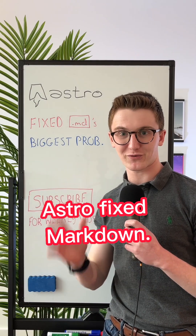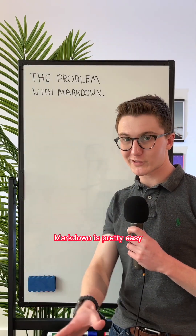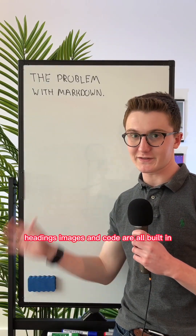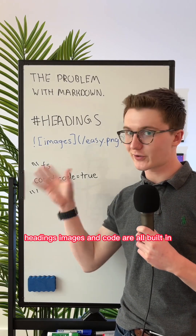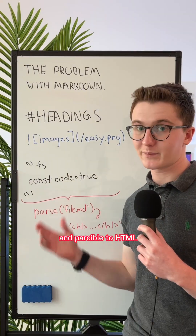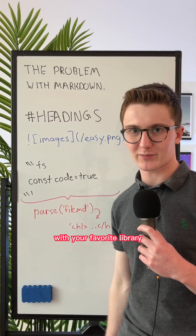Astro fixed your biggest problem with Markdown. On its surface, Markdown's pretty easy. Headings, images, and code are all built in and parsable to HTML with your favorite library.